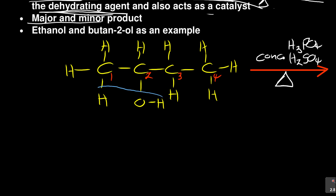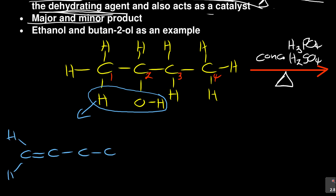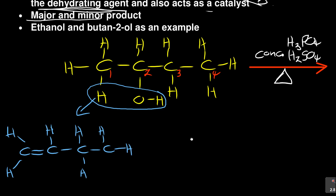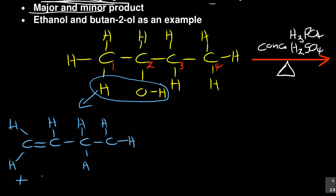Two things are going to form. Pay attention: the first elimination will involve carbons one and two, because water can be formed there. So the double bond forms between carbon one and two — giving my first structure, plus water (H₂O). That's why it's called dehydration — I'm taking out water.